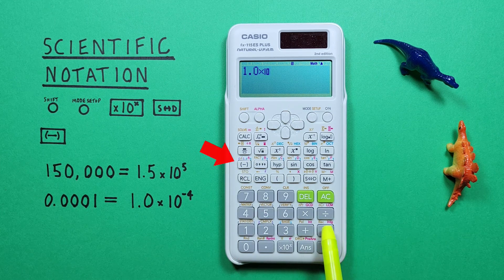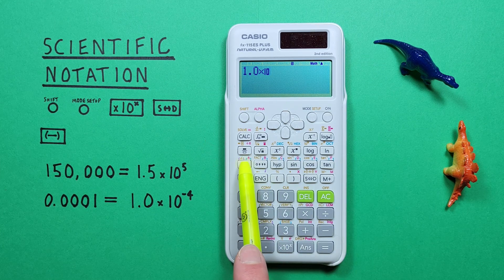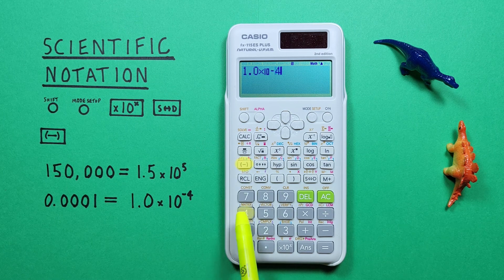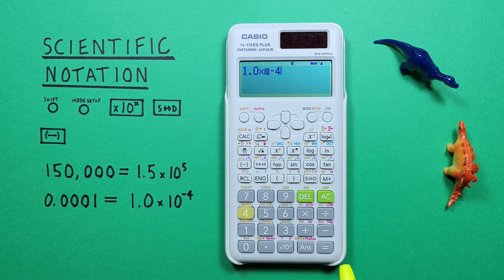which is negative 4. So we want to use the negative key here, not the subtraction key. That'll give us a different result. So it'll be negative 4. And press equals.